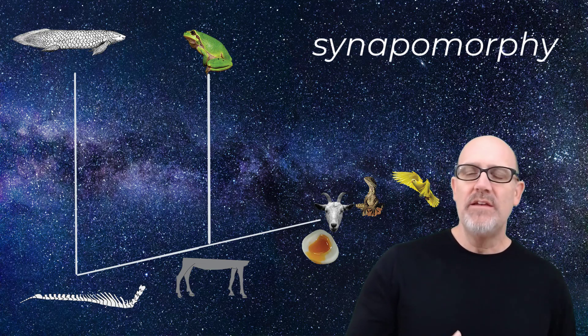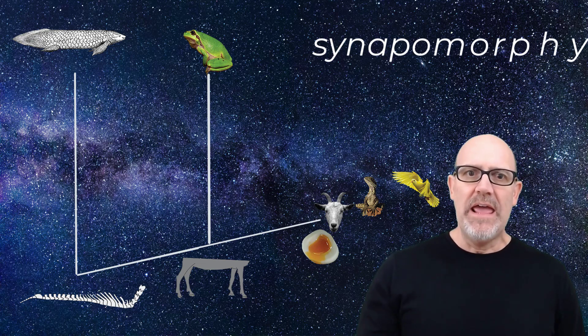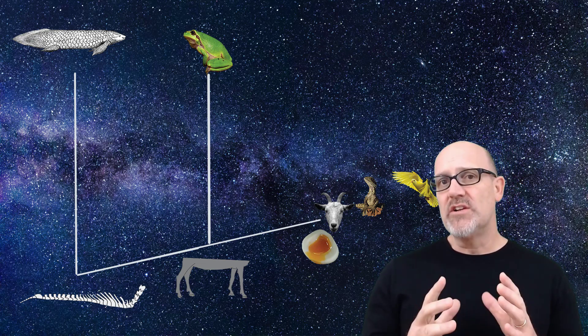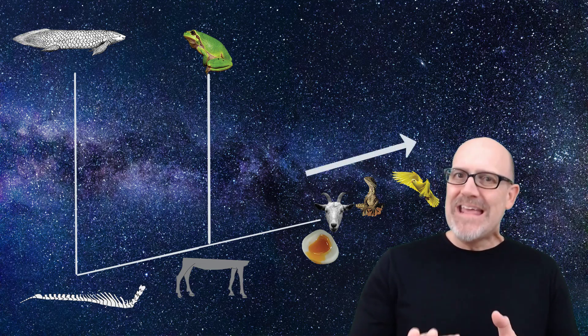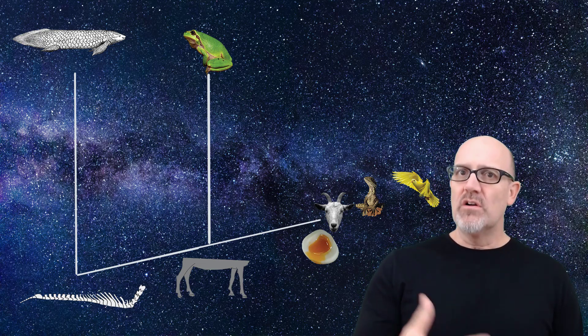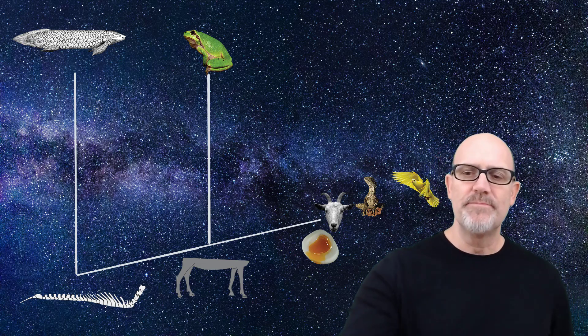We call those evolved traits synapomorphies. Those synapomorphies belong to the goat, the lizard, and the bird. Once that trait has evolved, it continues in the descendants to the right. That doesn't mean that the group containing the frog goes extinct. It continues to evolve in lots of other ways.